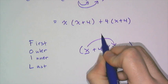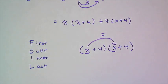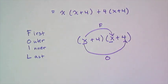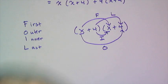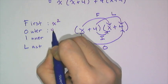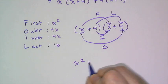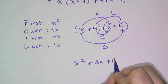So F (first) stands for the first term in each factor, so x times x - this is the F in FOIL. Then O (outer) is the outer terms, so x times 4. The inner are the two inner terms, and the last are those two last terms. So FOIL gives us x² + 4x + 4x + 16, and then you add them together and you get x² plus 8x plus 16.